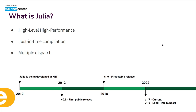Julia also has something called multiple dispatch, which I won't go into detail on, but essentially Julia is not object-oriented. It has a lot of things like classes but it does not have classes.